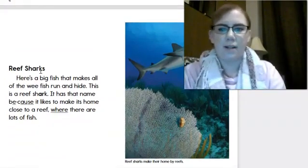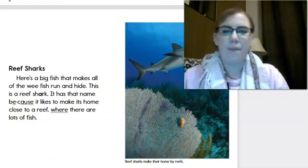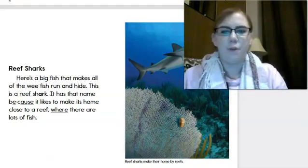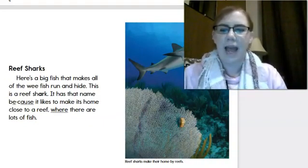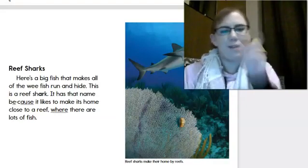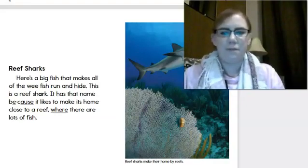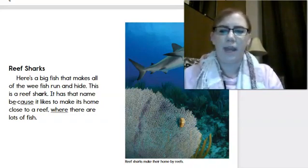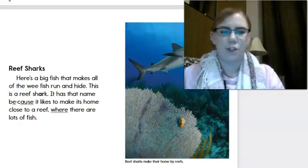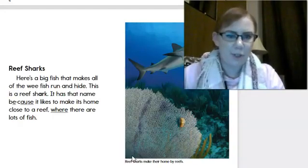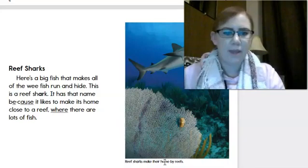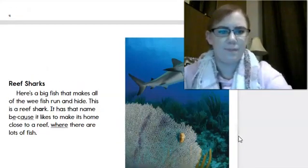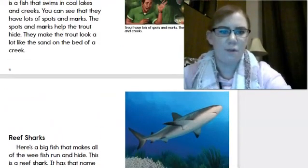Reef sharks. Here's a big fish that makes all of the wee fish run and hide. Remember, wee fish are small fish. This is a reef shark. It has that name because it likes to make its home close to a reef. Where there are lots of fish. And this picture has a caption too. Reef sharks make their home by reefs. And here's a picture of the reef shark.